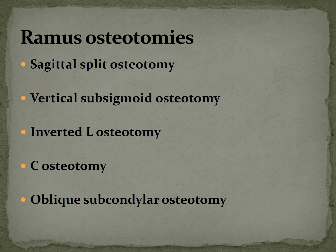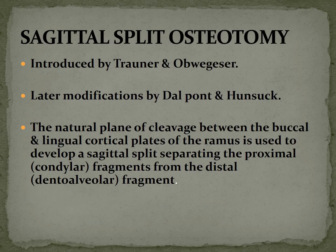Ramus osteotomies include sagittal split osteotomy, vertical subsigmoid osteotomy, inverted L osteotomy, C osteotomy, and oblique subcondylar osteotomy. Sagittal split osteotomy was introduced by Troner and Obvig and later modified by Dal Pont and Hunsak. It uses the natural plane of cleavage between the buccal and lingual cortical plates of the ramus to develop a sagittal split, separating the proximal fragment (containing the condyle) from the distal fragment (the dental alveolar fragment).